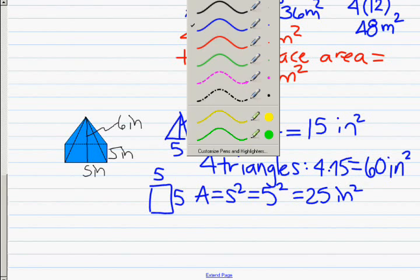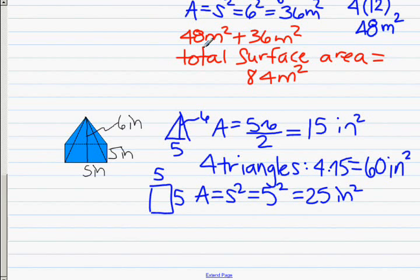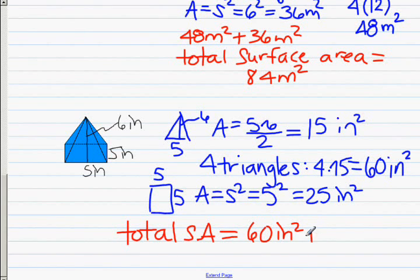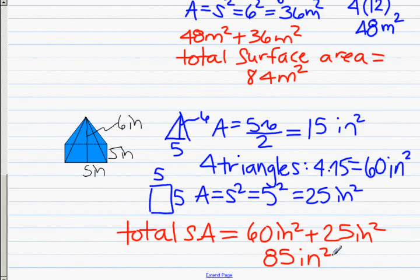And again, we have to total, since we have all these 5 faces together. To get our total surface area, we're going to get 60 inches squared from the triangular faces, plus the square base, which is 25 inches squared. We get that all together, and it's 85 inches squared, or 85 square inches.